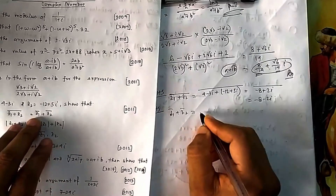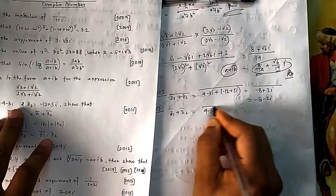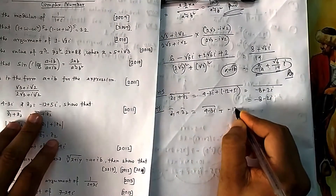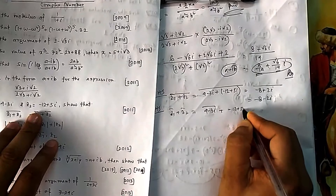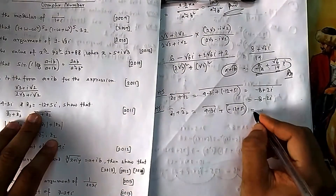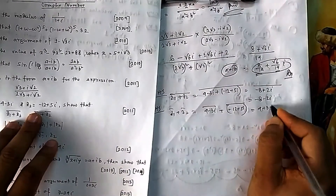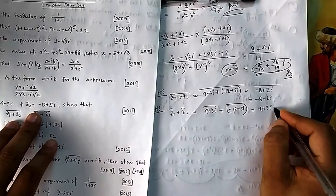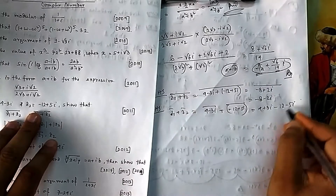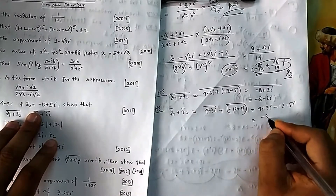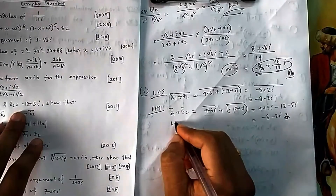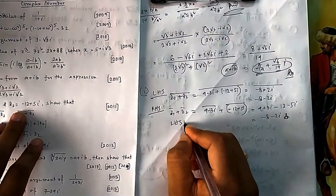For RHS, compute z̄₁ + z̄₂. z₁ = 4−3i, so z̄₁ = 4+3i. z₂ = −12+5i, so z̄₂ = −12−5i. Adding: 4+3i + (−12−5i) = −8−2i. Both LHS and RHS are equal, so the first part is proved.